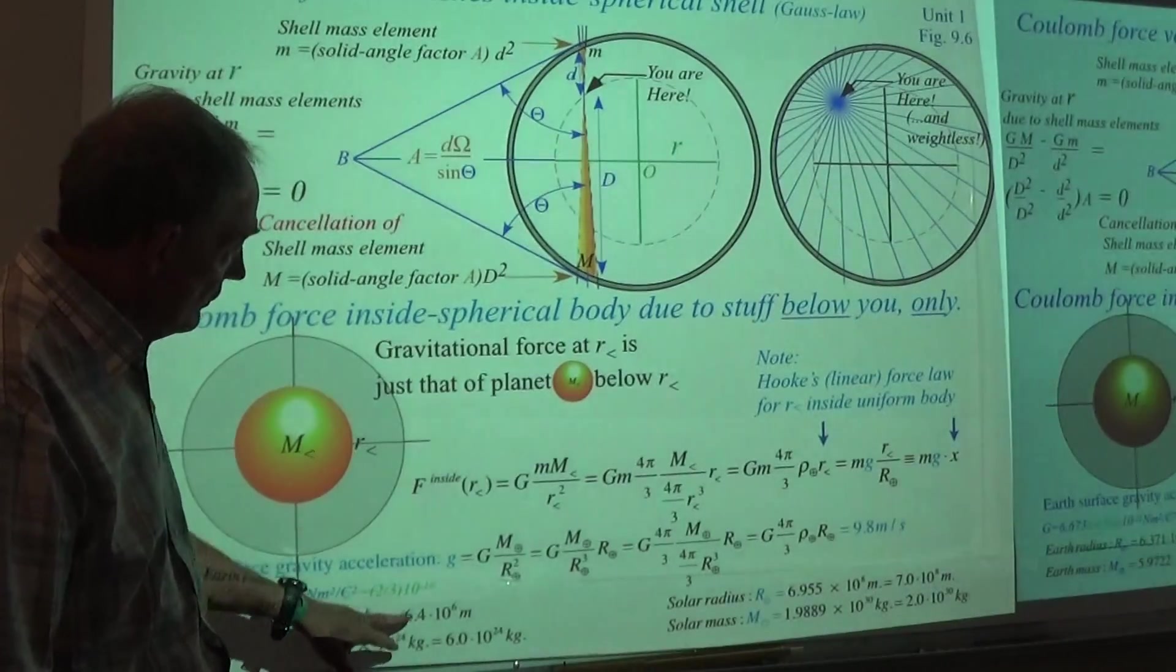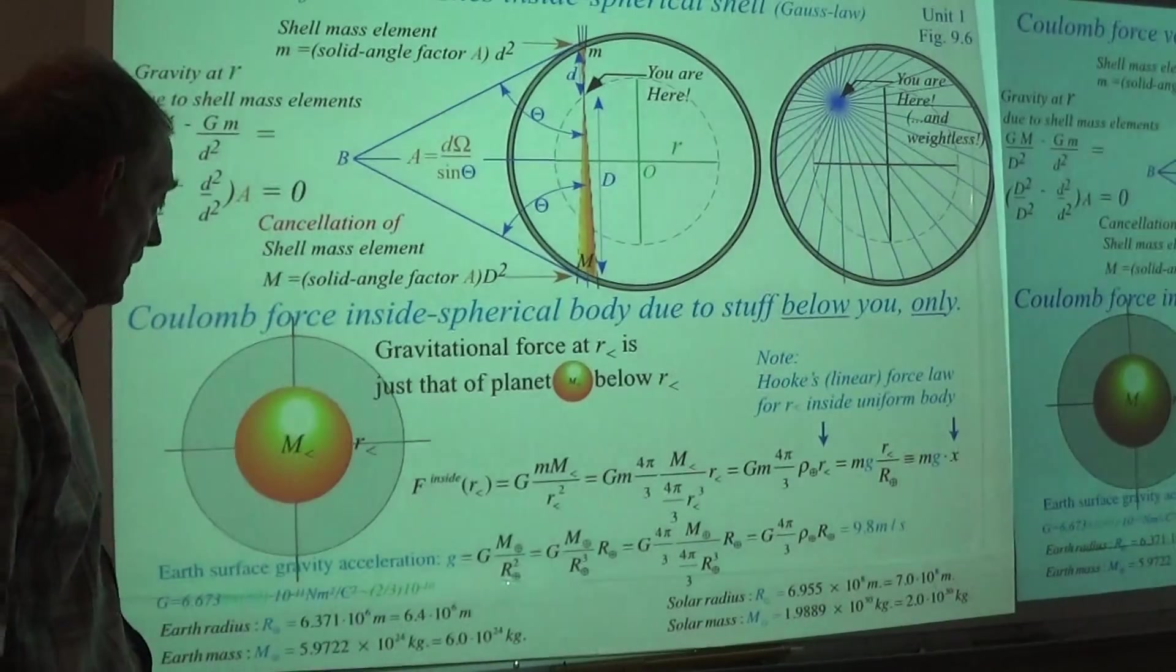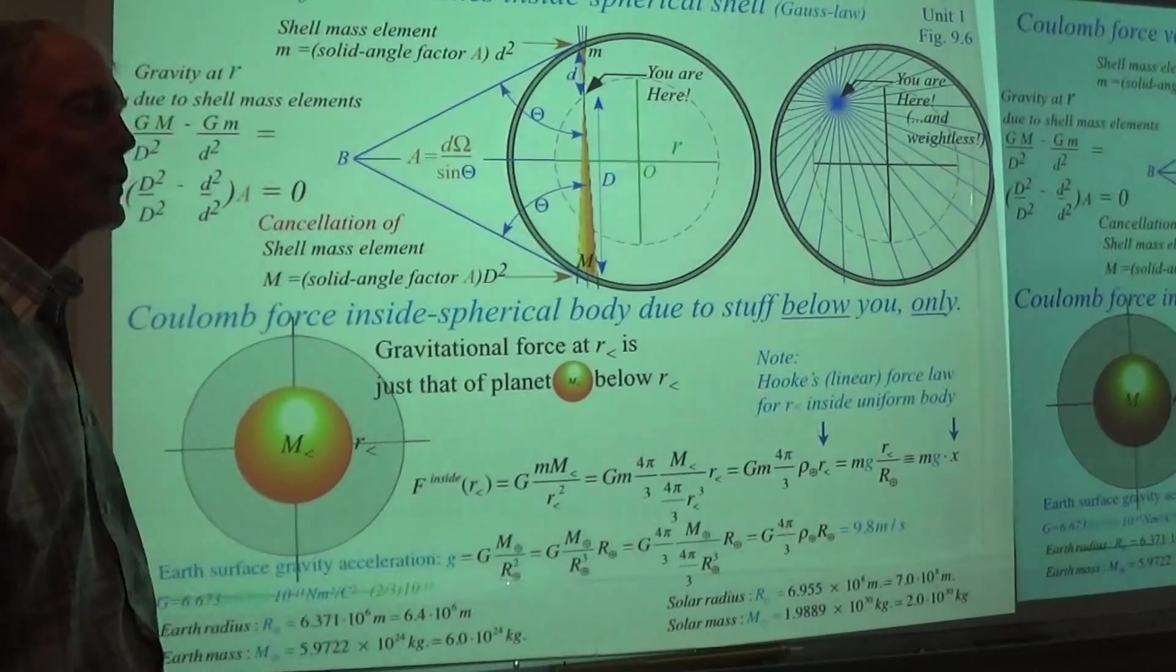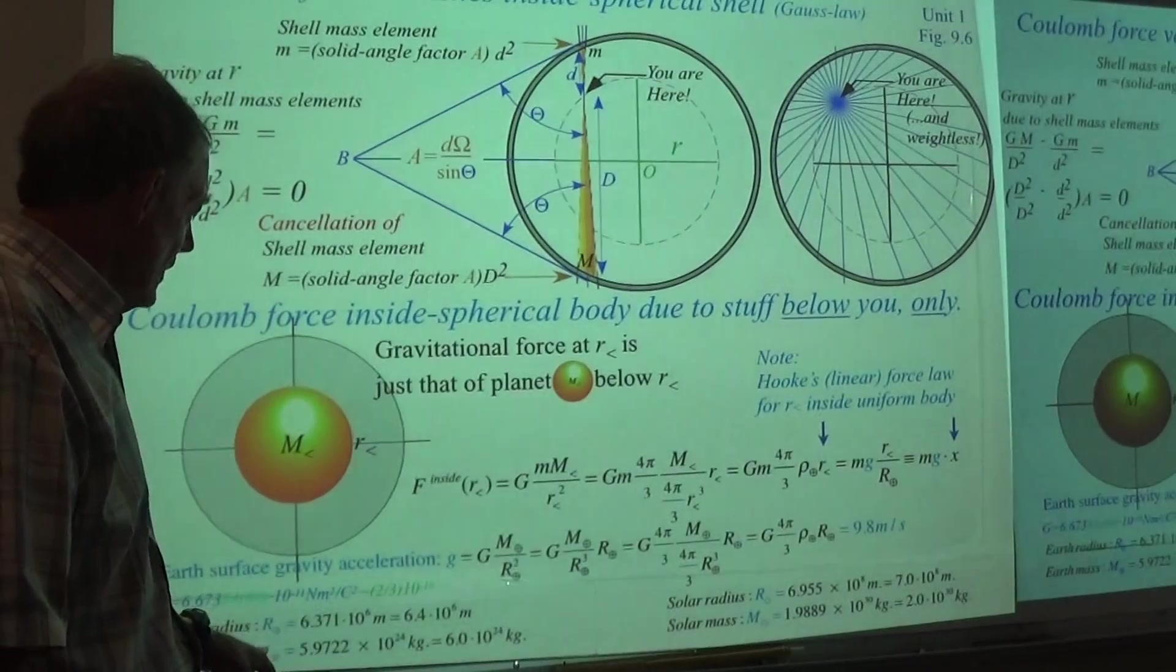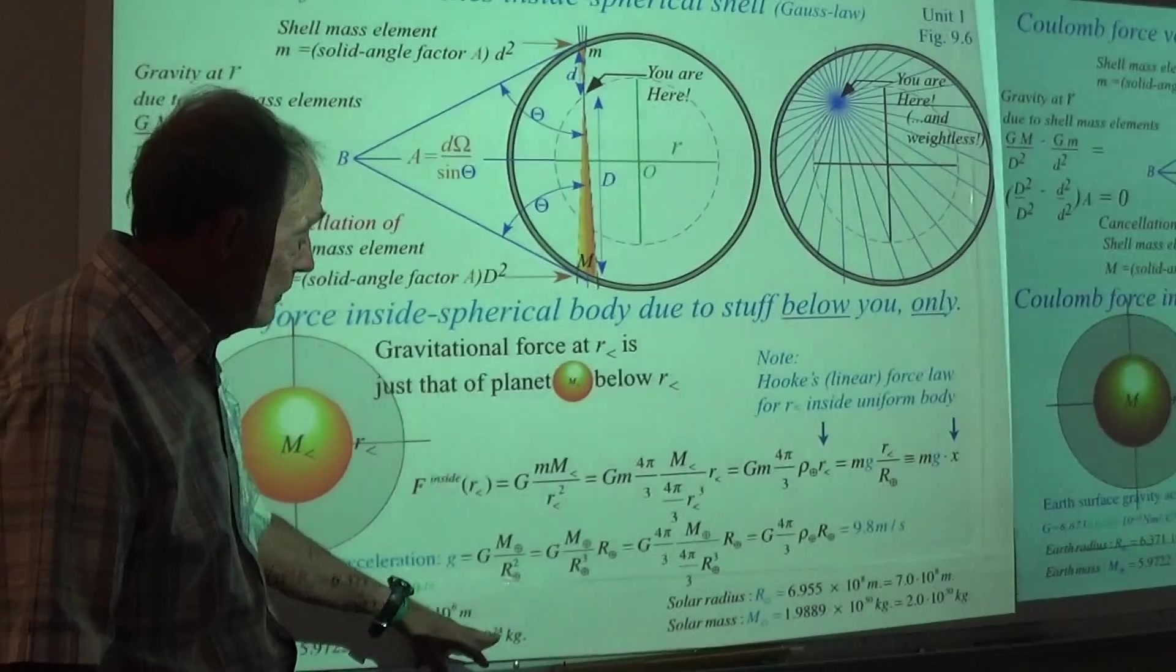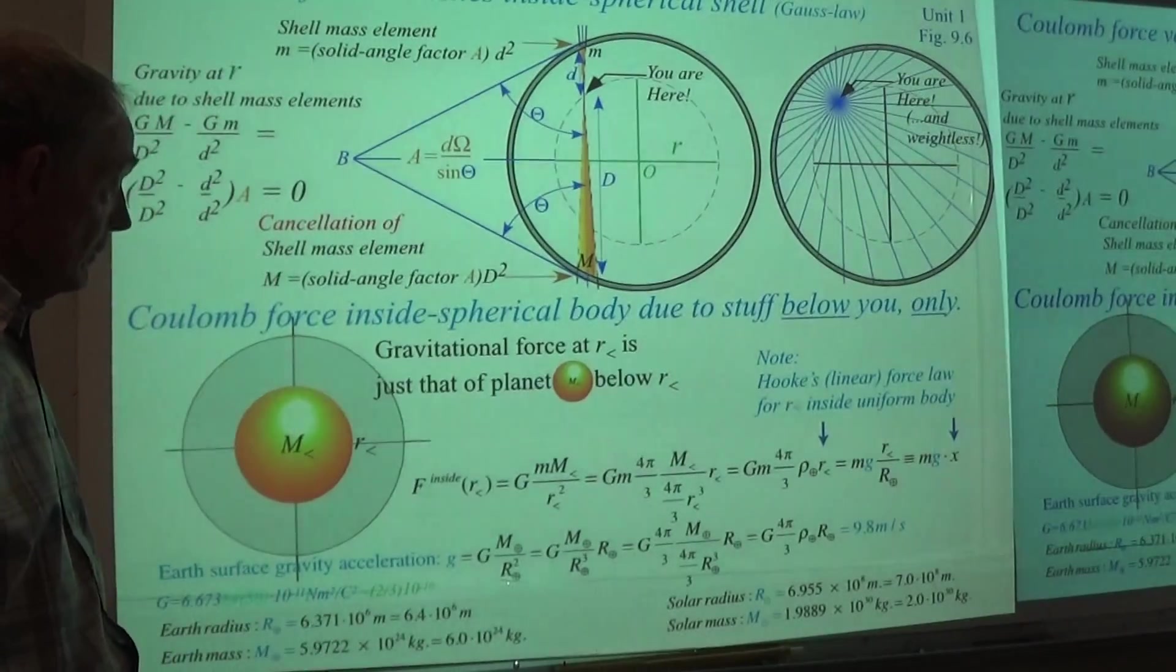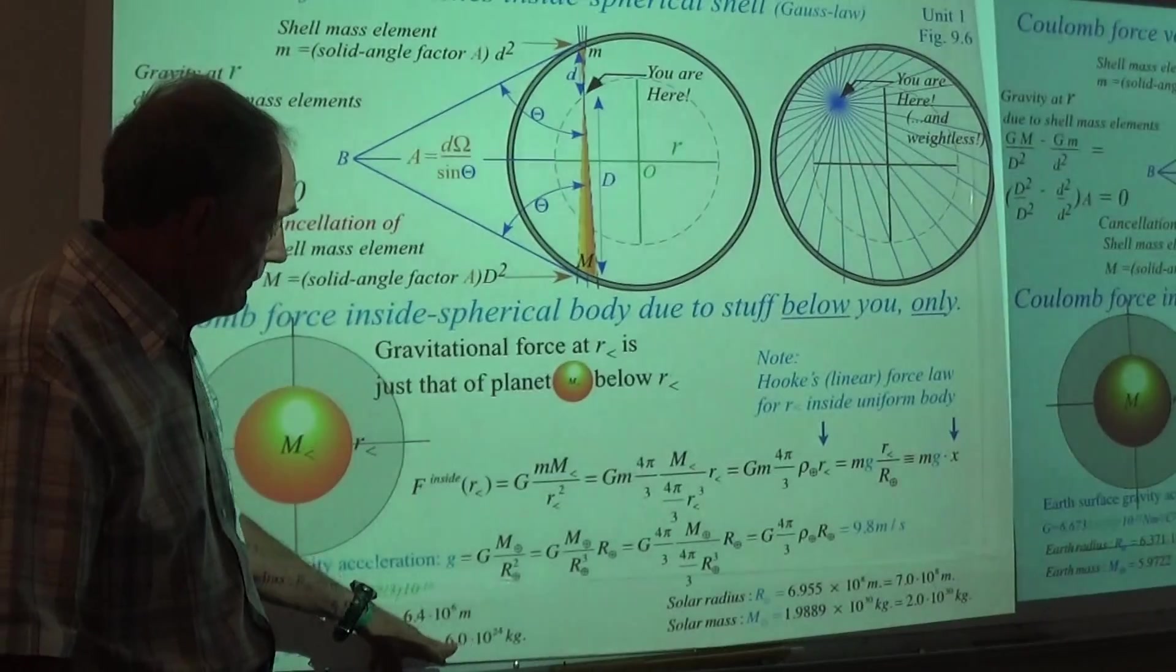If I just go to two figures, 6.4 times 10 to the 6 meters, that rolls off your tongue a little better. And then there's 59722, well that's 6 times 10 to the 24 kilograms, that's the entire mass of the Earth, just to a couple figures.